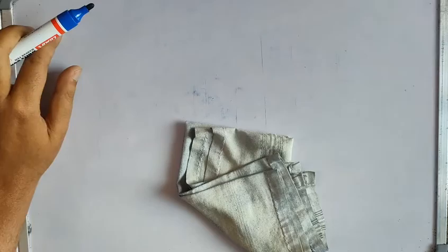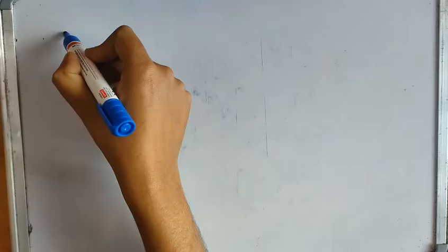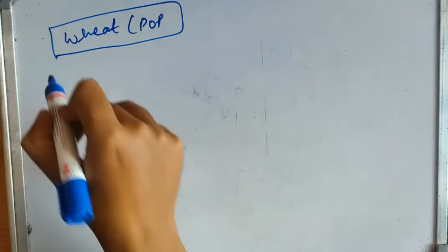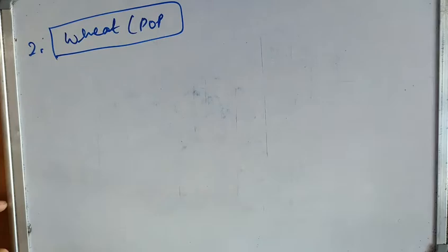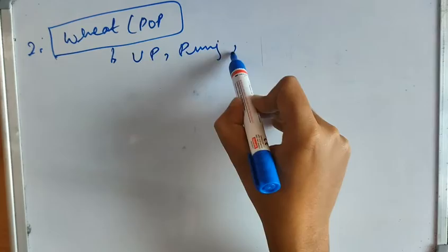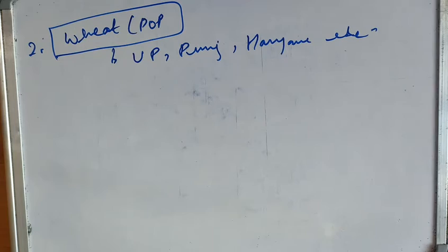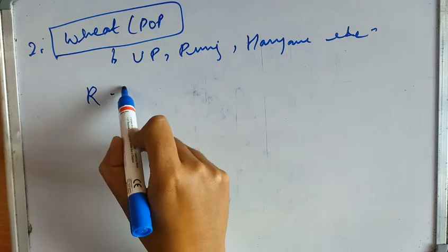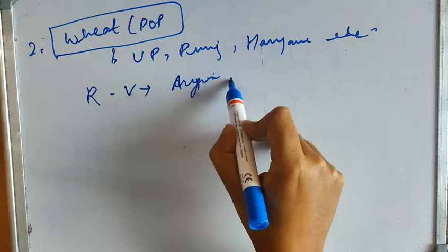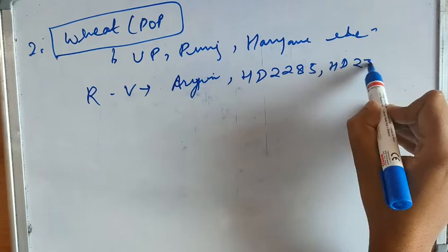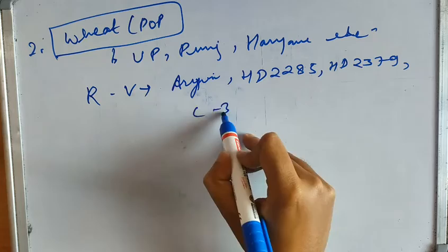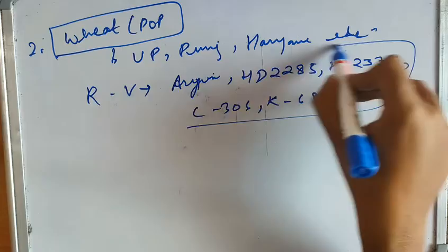Now moving to the package of practice of wheat — the second cereal in our topic. Major wheat-growing states are Uttar Pradesh, Punjab, and Haryana. Some recommended varieties include Arjun, HD 2285, HD 2379, C306, K68, and Lok 1. These are some common varieties of wheat.